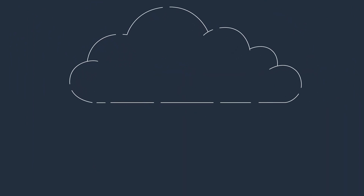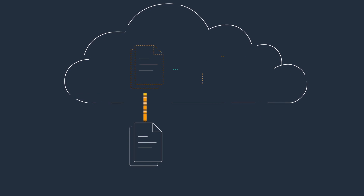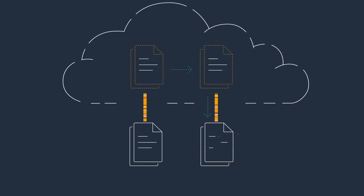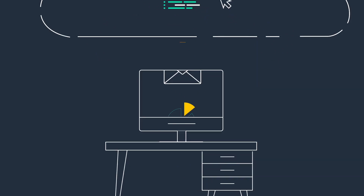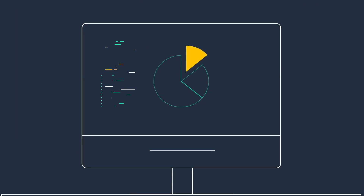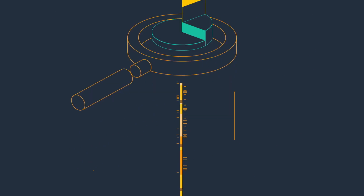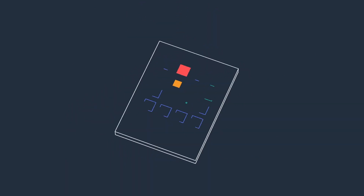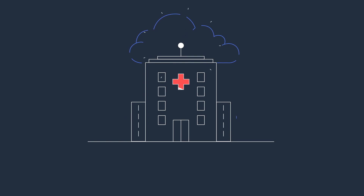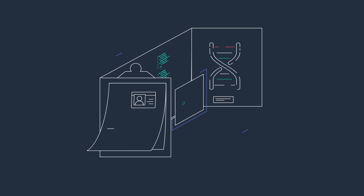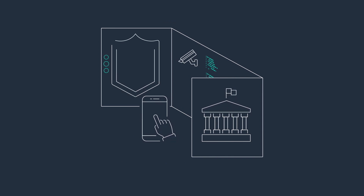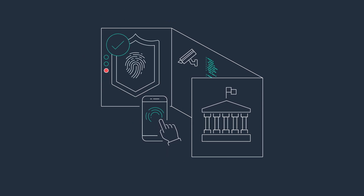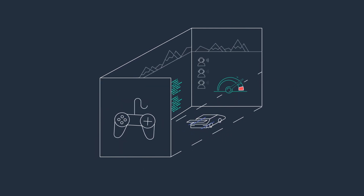The cloud enables users to access the same files and applications from almost any device, because the computing and storage takes place on servers in a data center instead of locally on their own devices. This is why a user can log into their Instagram account on a new phone after the old phone breaks and still find the old account in place with all their photos, videos, and conversation history. It works the same way with cloud email providers like Gmail or Microsoft Office 365 and with cloud storage providers like Dropbox or Google Drive.